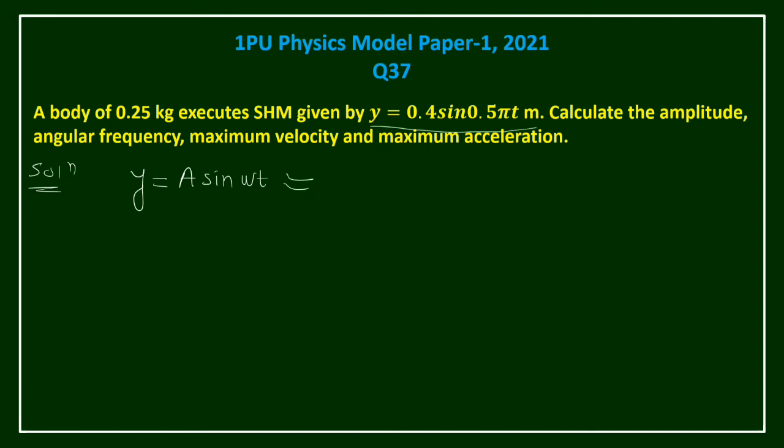This is the basic equation. Now our given equation is 0.4 sin(0.5πt). So by comparing, you will get A = 0.4. This is the amplitude in meters. So here we are getting this answer - amplitude.